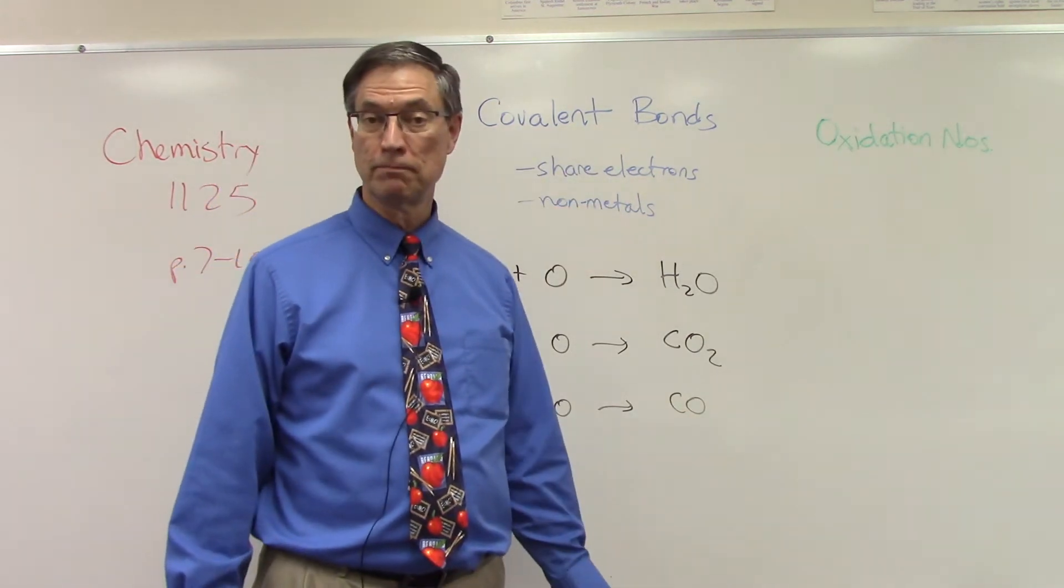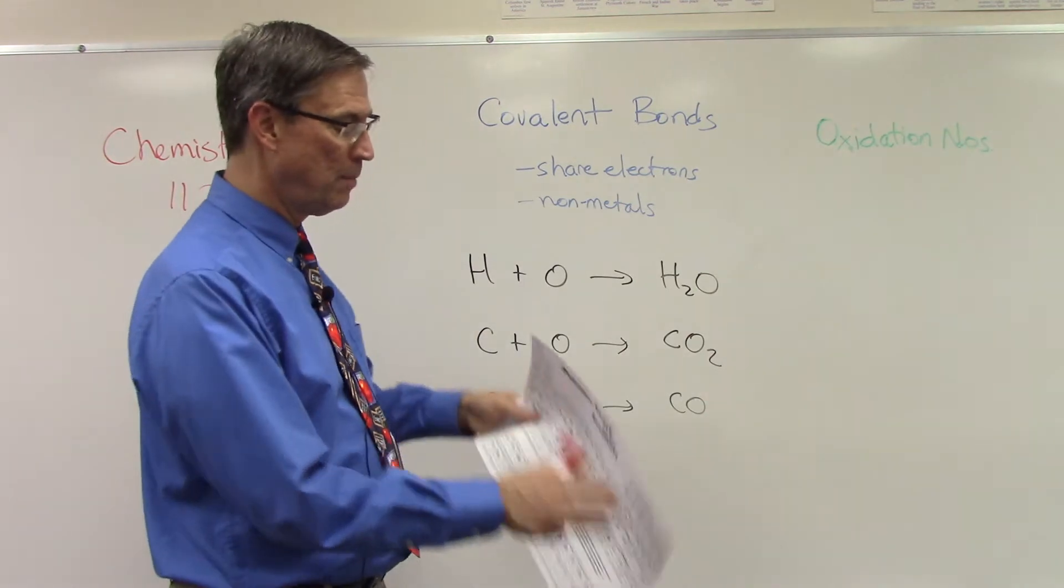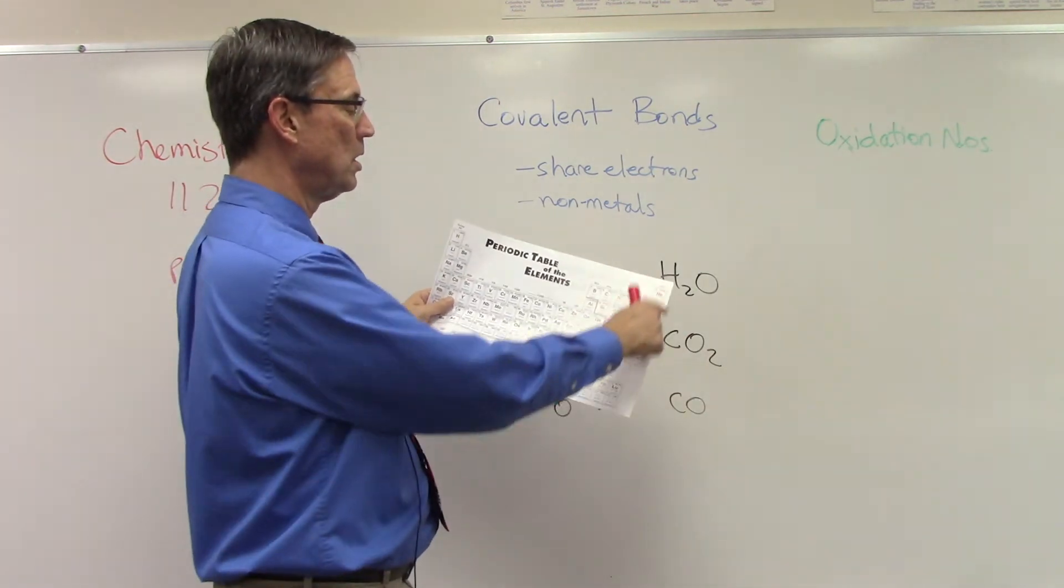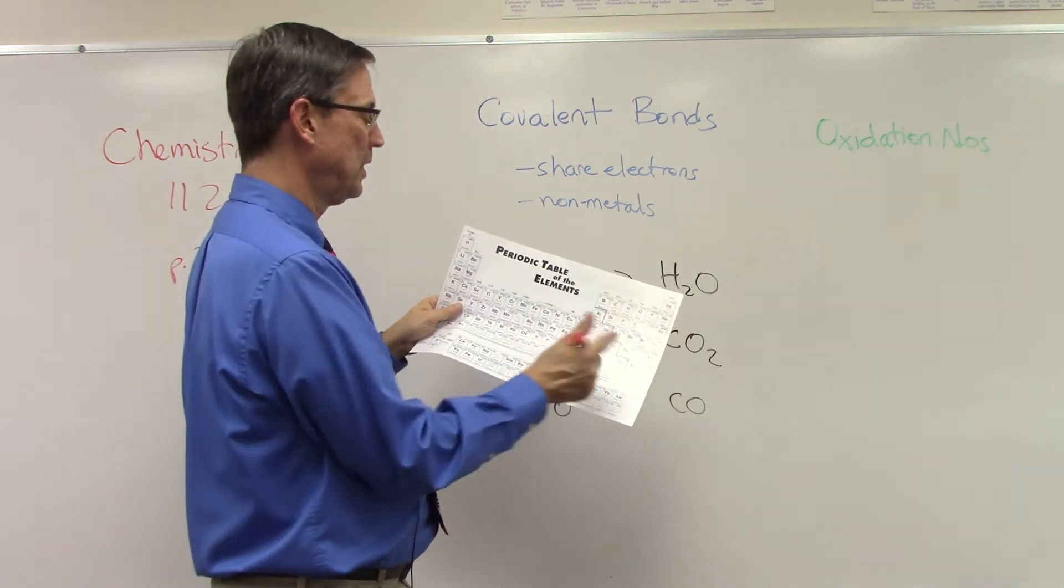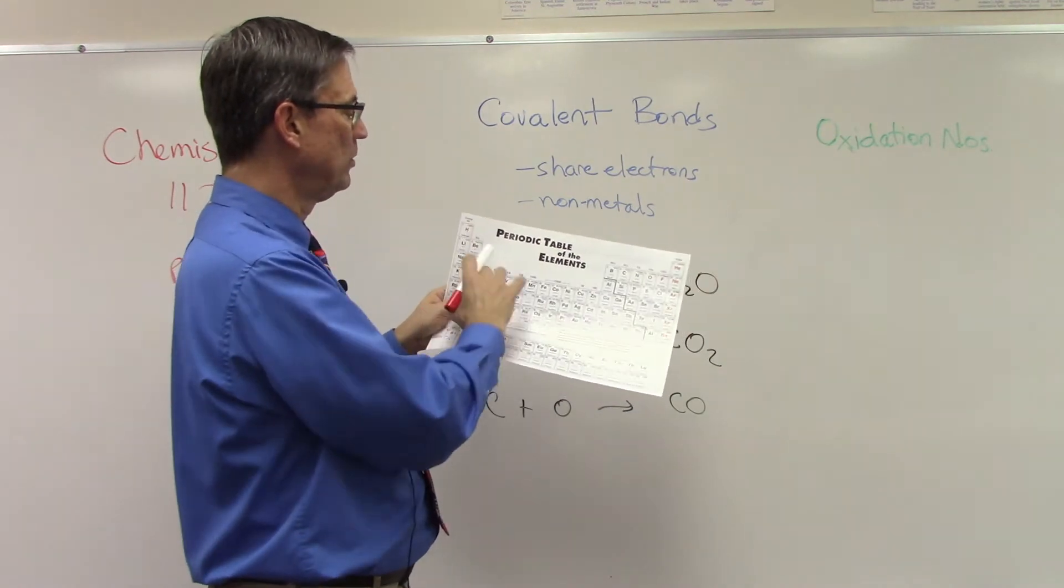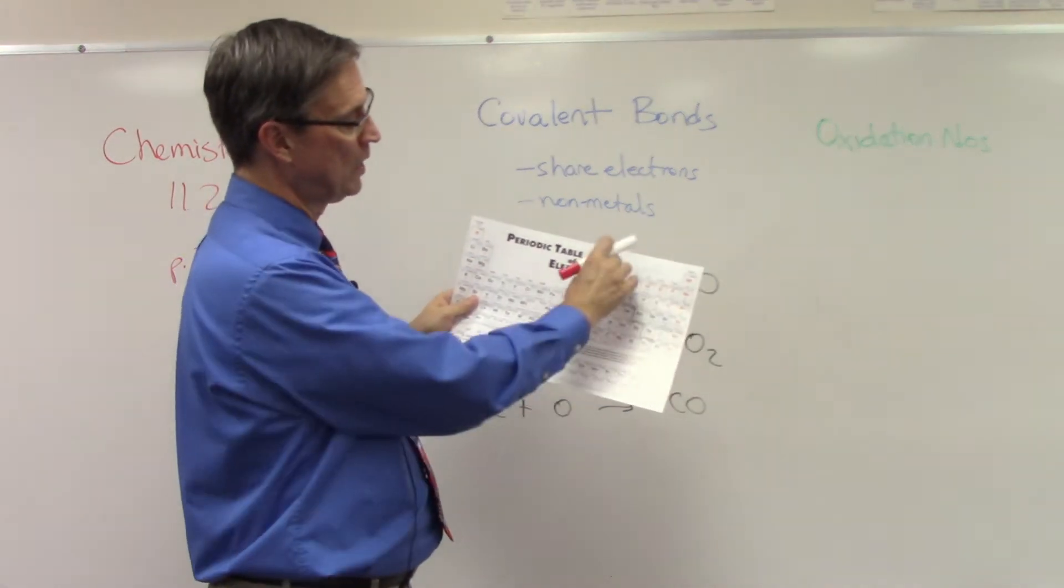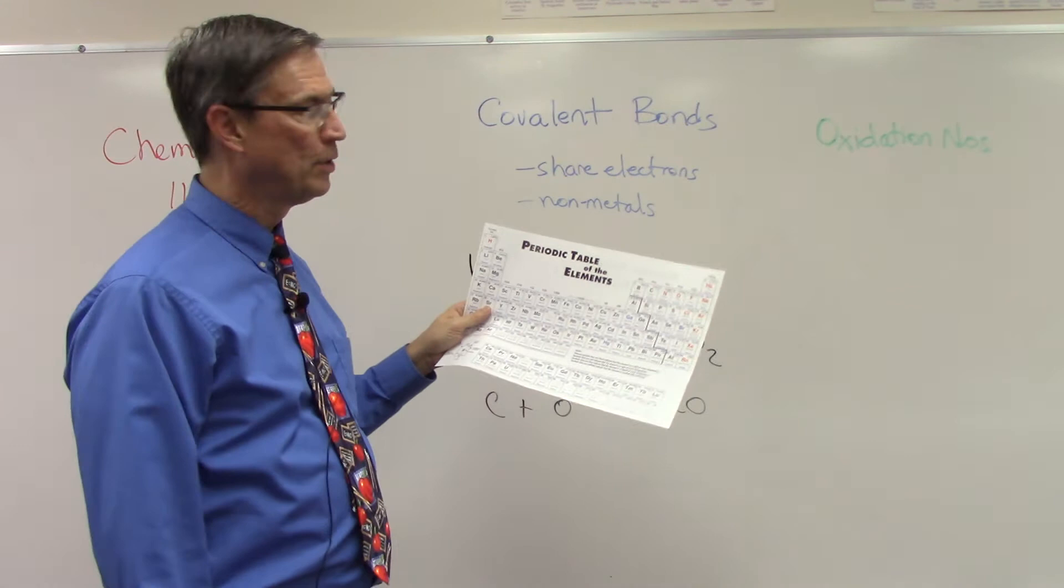Typically, they're non-metals. So the non-metals are this whole section, the upper right-hand corner of the periodic table. These are metals, and then these are metals as well. Transition elements, we'll talk about those later.